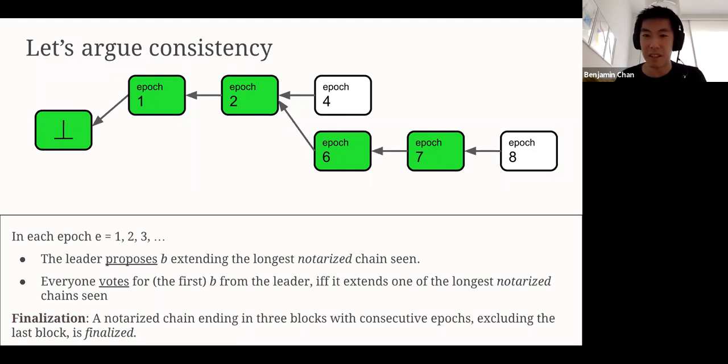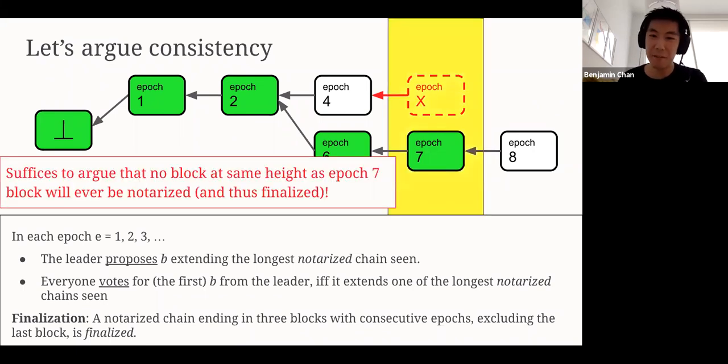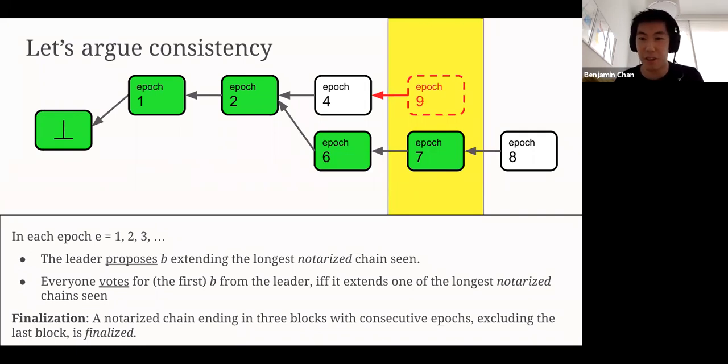So let's argue consistency. How can we be so sure that our finalization rule works? Why is it that our longest notarized chain voting rule works? It's actually a very natural argument. Let's say that we had some competing block at the same height as the epoch 7 block. I'll call it the epoch X block proposal. It suffices to argue that no such block can exist that is ever notarized, at least, and that's finalized. Why is that sufficient? Well, then we can argue that any finalized blockchain must contain the epoch 7 block. Therefore, we've reached agreement that way. Everyone must agree on the epoch 7 block. To walk through the argument for why this is the case, let's consider the epoch 9 block, and let's pretend that the epoch 9 leader proposed a block extending the epoch 4 notarized block. The question is, can our epoch 9 block ever get notarized? Of course, the answer is no.